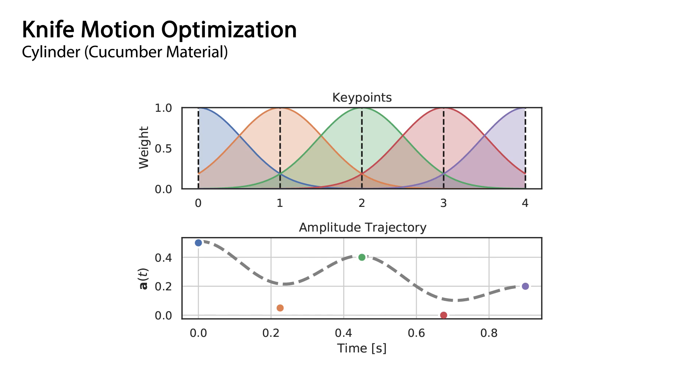Besides for parameter inference, the gradients of our differentiable cutting simulator can also be used to optimize the cutting motion of the knife. In this experiment, we represent a trajectory by keyframes, which encode the downward velocity, as well as the frequency and amplitude of a sinusoidal sideways velocity.